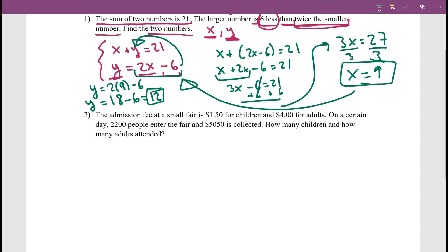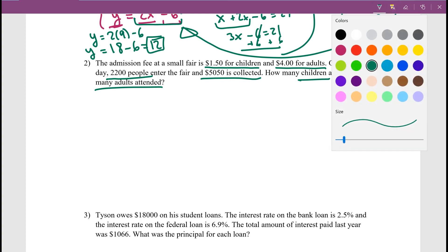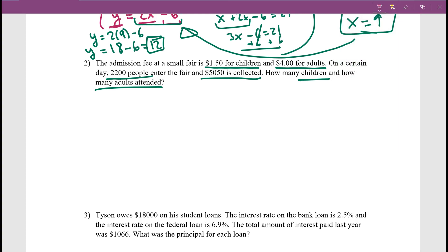That's the first type of problem. Now the second type: the admissions fee at a small fair is $1.50 for children and $4 for adults. On a certain day, 2,200 people — including children and adults — entered the fair, and $5,050 was collected. How many children and how many adults attended? We don't know the breakdown, so let x be children and y be adults. The sum x plus y equals 2,200.